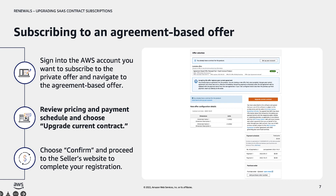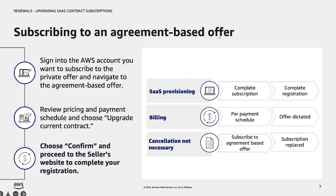The customer will then review the dimensions, payment schedule, and EULA and then choose Upgrade Current Contract. It is important to note that AWS does not provision SaaS products to buyers. Therefore, buyers must complete registration on the seller's website after finishing the subscription in AWS Marketplace. The buyer will be billed per the payment schedule dictated in the new private offer, and no cancellation of the previous subscription is necessary. The new private offer will replace the previous subscription once subscribed to.